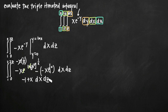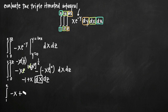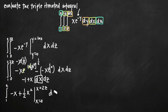Now we integrate with respect to x because dx is our next inside variable. We leave the outer integral from 1 to 2. Integrating with respect to x: negative 1 becomes negative x, and x becomes plus one half x squared. We evaluate that on the interval x equals 0 to x equals 2z, then leave dz for the next step.